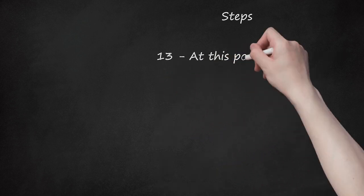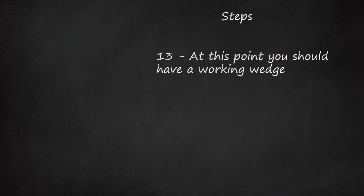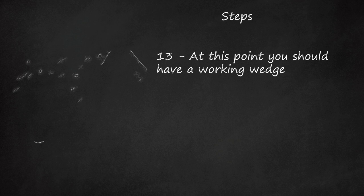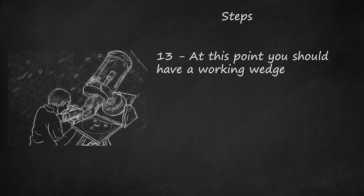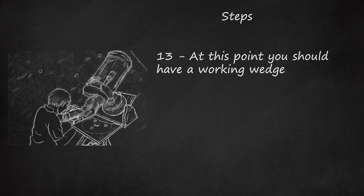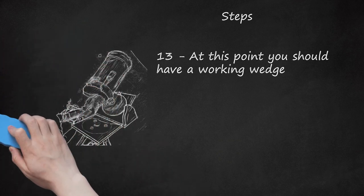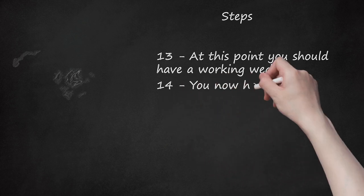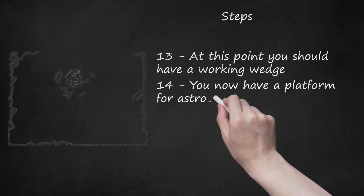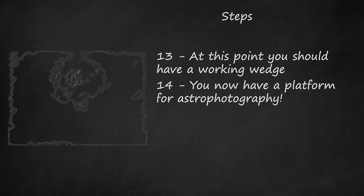Step 13: At this point you should have a working wedge. All you need is a clear night and an understanding of how to polar align the telescope. The shelf under the telescope mount board can be used to store eyepieces or a larger battery to power the scope's electronics. Sand everything down to remove any splinters and sharp edges and finish to your preference. Step 14: You now have a platform for astrophotography. Enjoy.